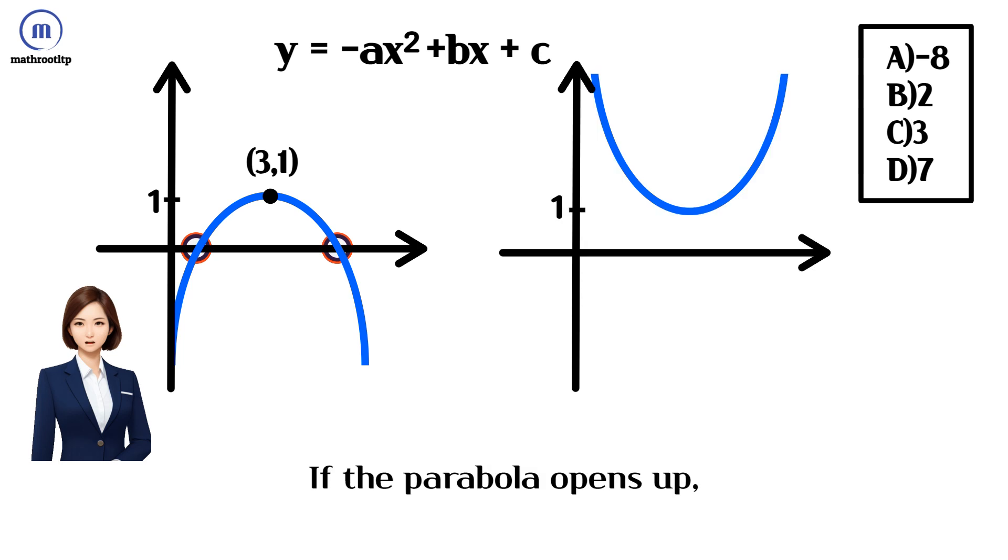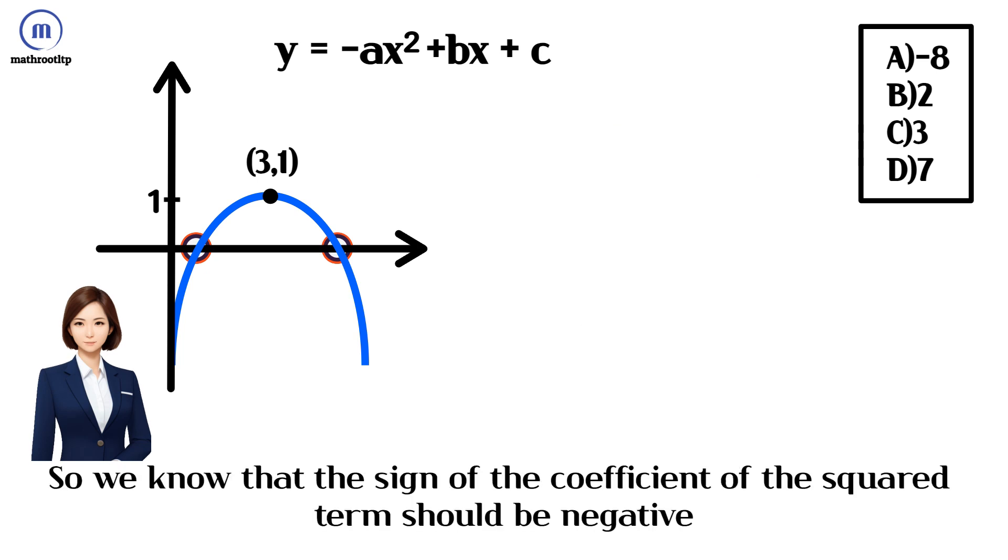If the parabola opens up, it cannot intersect the x-axis. So we know that the sign of the coefficient of the squared term should be negative.